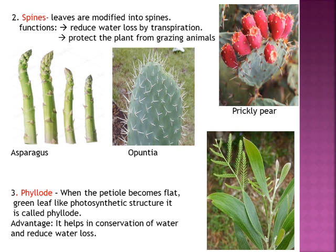A fact from your book: in Opuntia, the prickly pear, the leaves are modified into small hard conical spines. The green-colored structure you see is actually the stem, which becomes green so that photosynthesis can occur. In Aloe vera and prickly poppy, the leaves have spines only on their margins. In Barberry, all the leaves are modified into spines. In Date Palm, the apex of the leaf is very pointed, forming a spine.